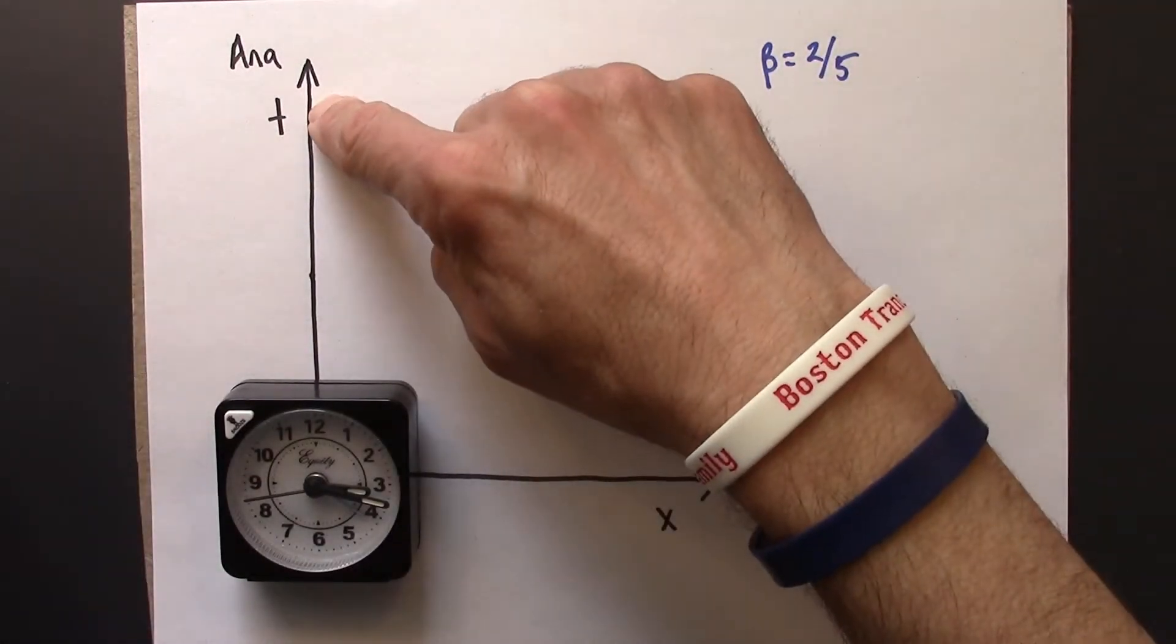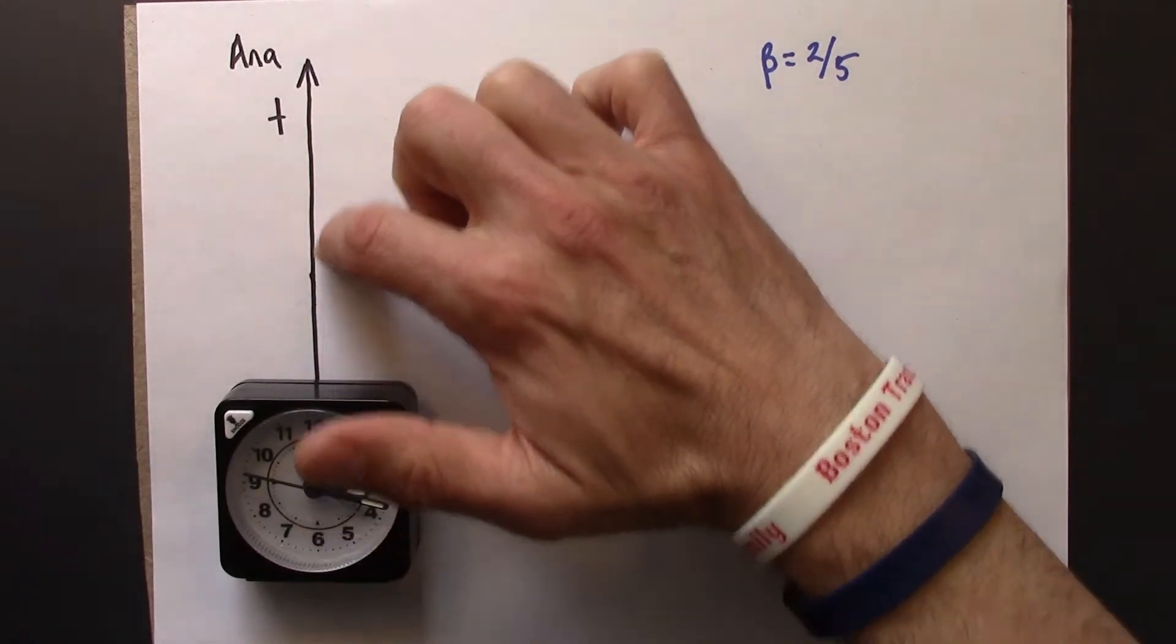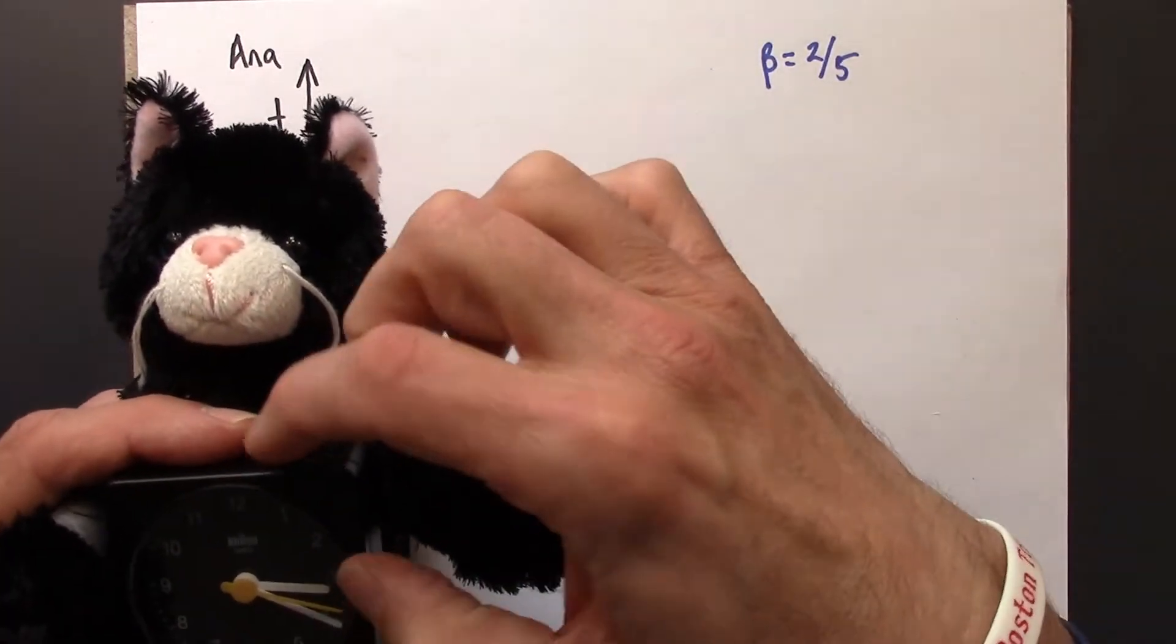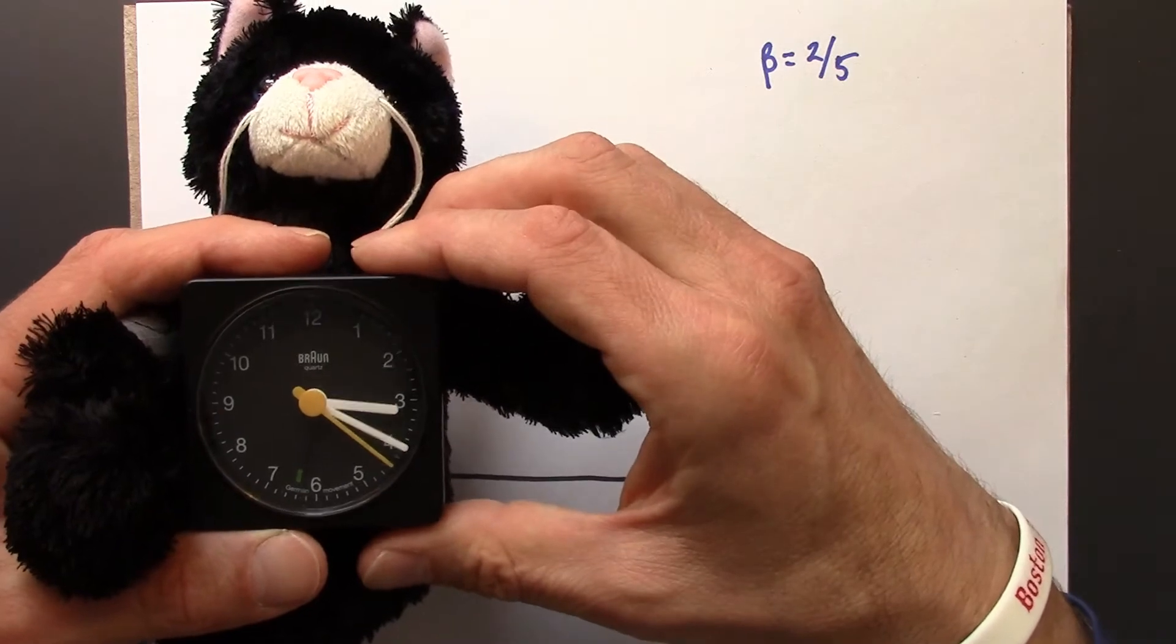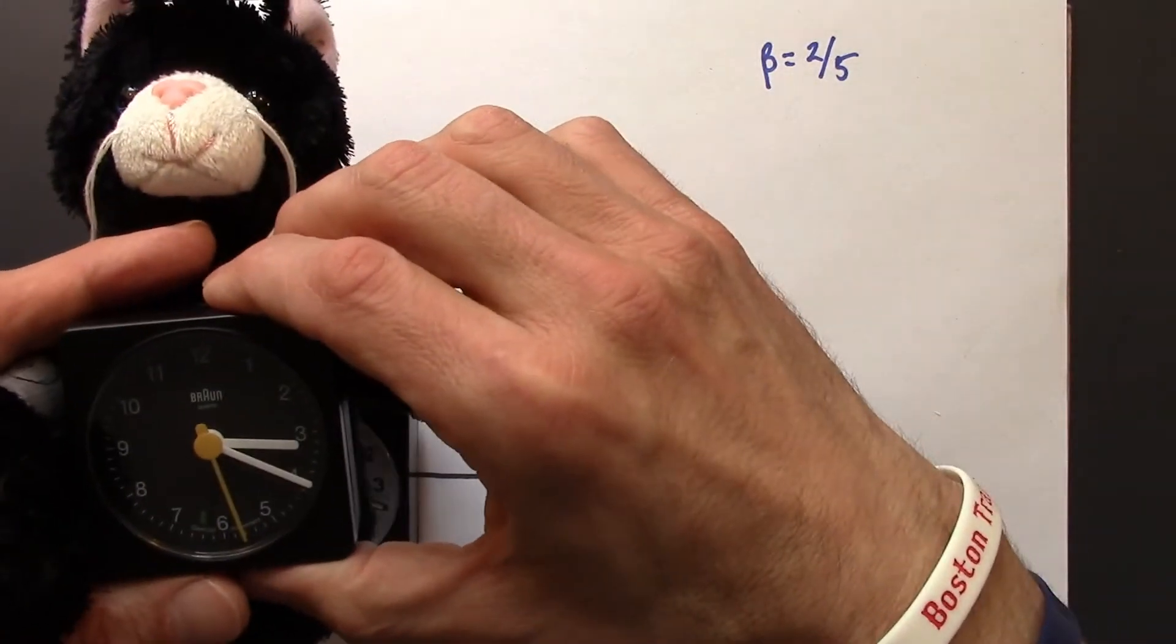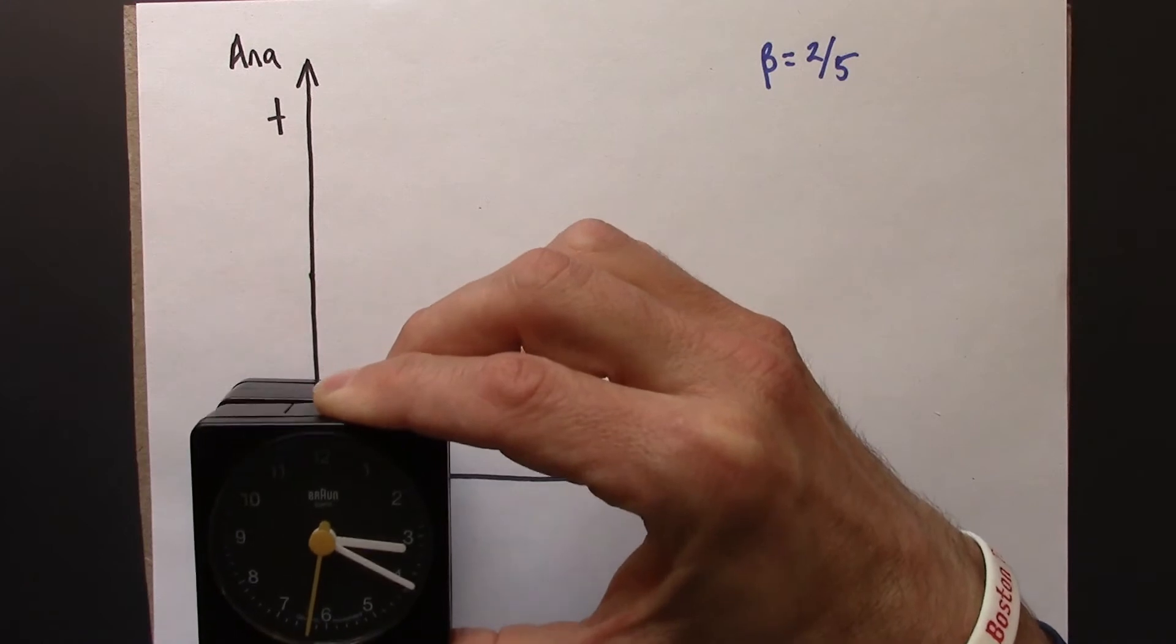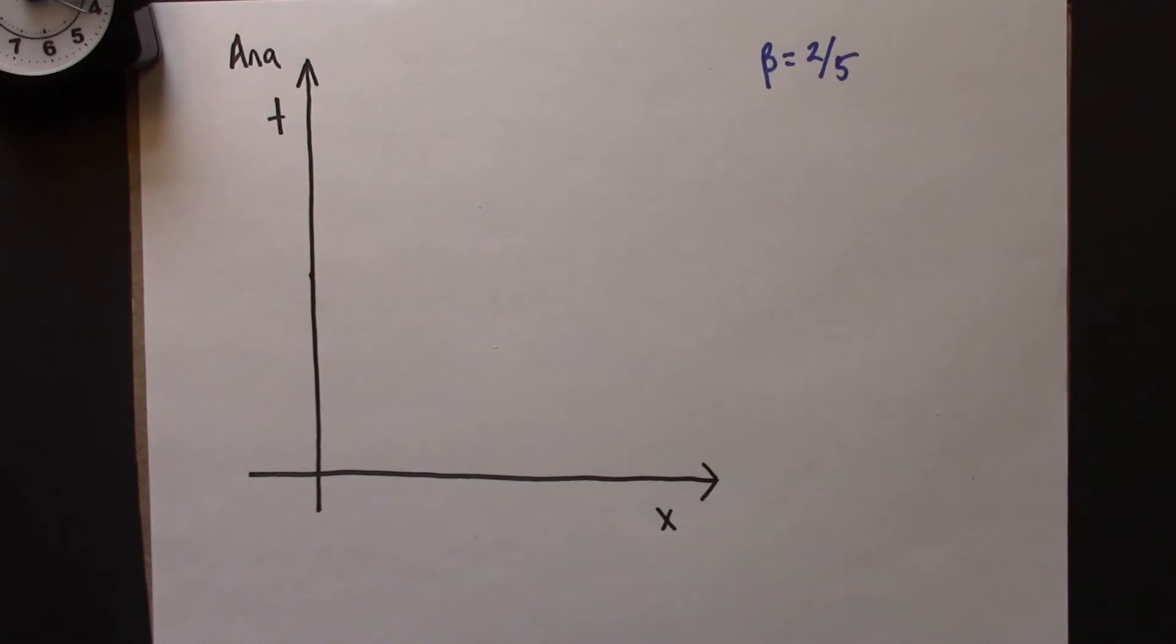Just like in Ana's frame, her clock at her origin is her time axis. In Beowulf's frame, Beowulf's clock at his origin is going to be the time axis. And since Beowulf is moving to the right at 2 fifths, we're interested in thinking about the world line of this clock. Because that will be the t prime axis. So let me draw that on and just say a little bit more about that.